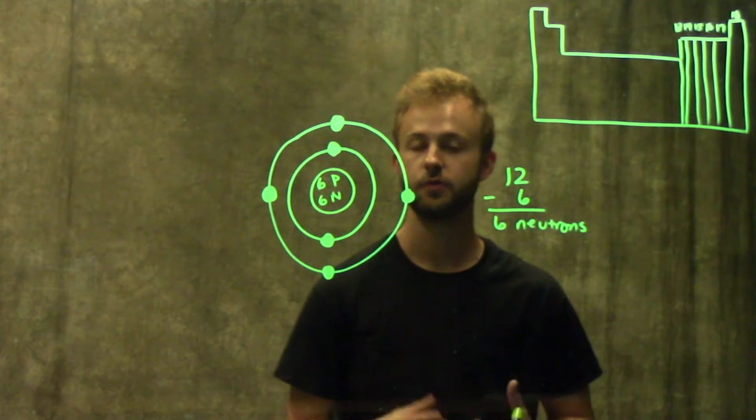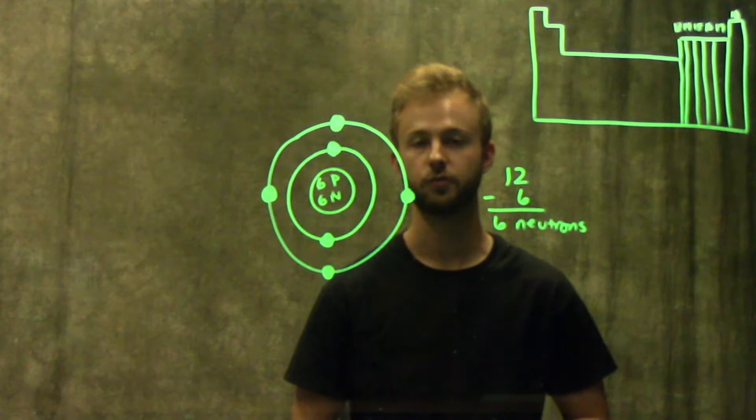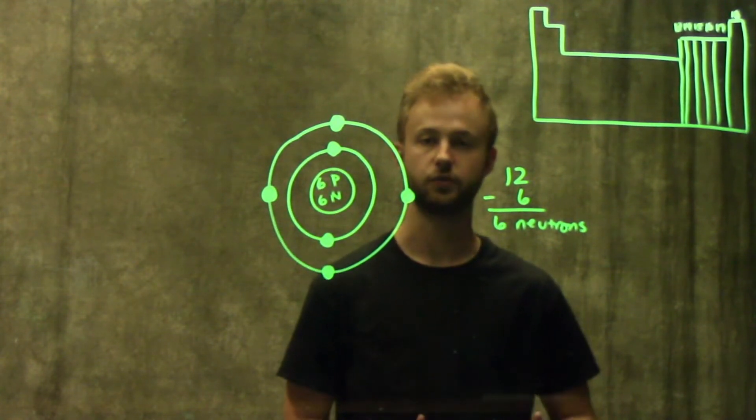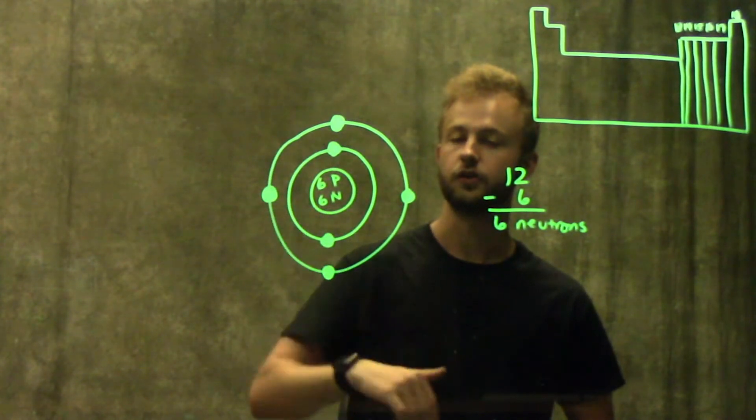Valence electrons are the most important electrons in an atom because they're the ones that are actually involved in making chemical bonds, and they're the ones involved in biological and chemical reactions. These electrons are super important.